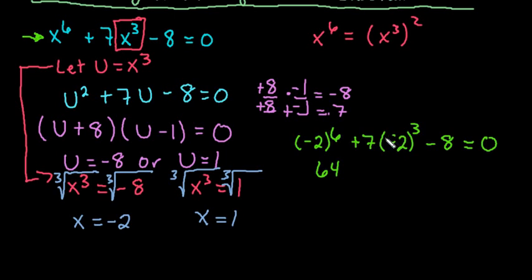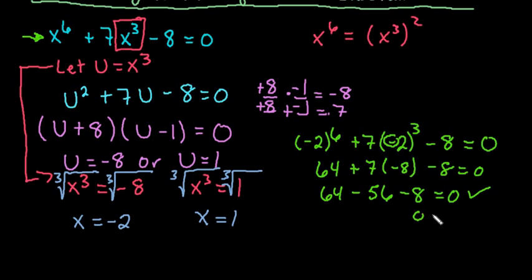For this one, because of the fact that this is negative and this is odd, it's going to give us a negative value. So negative 2 to the third power gives us negative 8. And then if I simplify this further, I get 64 minus 56 minus 8 equals 0, which is indeed a true statement. 64 minus 56 gives us 8 and 8 minus 8 equals 0. So we know that this is indeed one of our solutions.